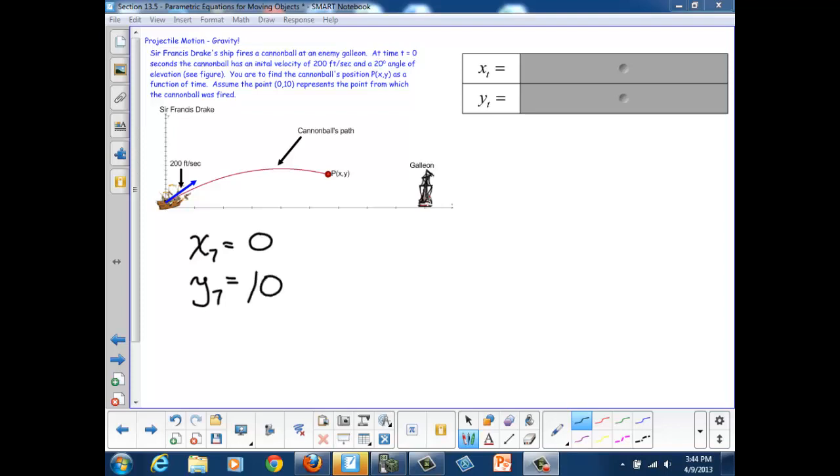Now we need our motion information, or rate times time. But right now, the rate we have isn't in terms of horizontal rates and vertical rates. It's given to us with a polar perspective, with a magnitude and a direction, 200 feet per second and 20-degree angle.